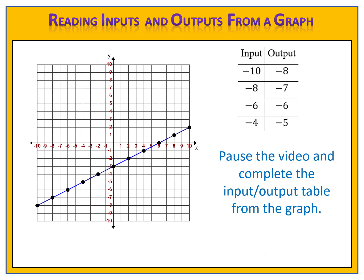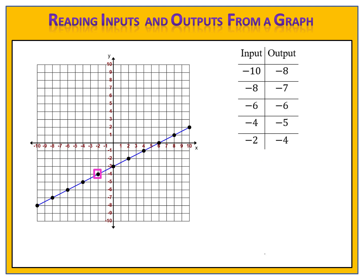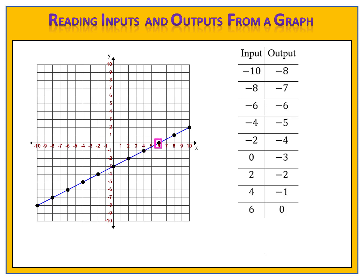Let's see how you did. We have the points: negative 2, negative 4; so we put negative 2, negative 4 in our table; then 0, negative 3; 2, negative 2; 4, negative 1; 6, 0; 8, 1; and 10, 2. I've completed the input and output table by reading values off of the graph.